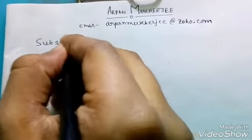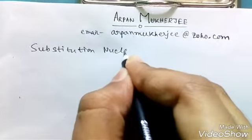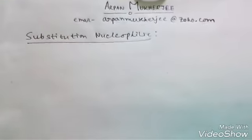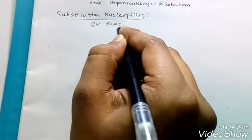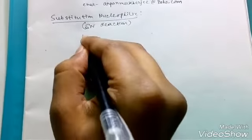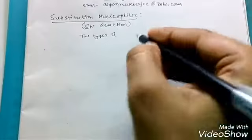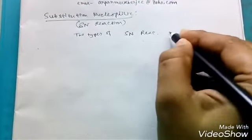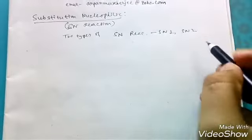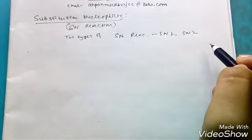We will start substitution nucleophilic. There are two types of SN reaction: SN1 and SN2. SN1 is substitution nucleophilic unimolecular and SN2 is substitution nucleophilic bimolecular.